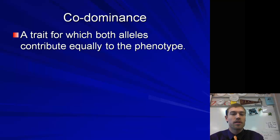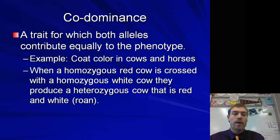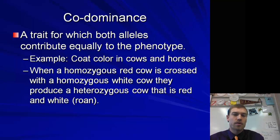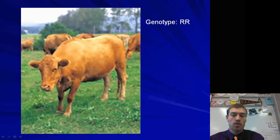Codominance is a trait where both alleles contribute equally to the phenotype. An example would be coat colors in cows and horses. A homozygous red cow is crossed with a homozygous white cow. Notice that we're not talking about dominant or recessive here because there is no dominant or recessive in this type. When they produce a heterozygous cow, it is going to be red and white, which is known as roan. We put both alleles as capital letters to show that this is codominance.